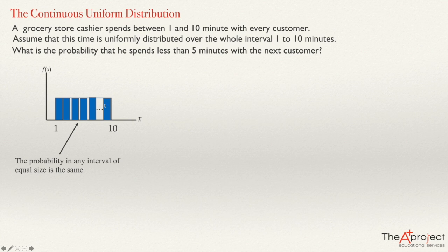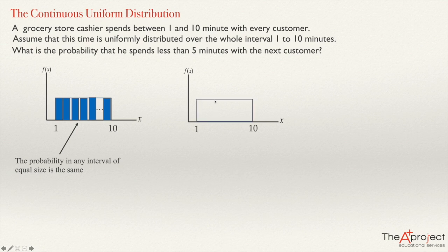So if we continue in this way, whatever rectangles we draw of the same base will have the same size. If we complete a histogram, it will be formed by rectangles of equal height. At the top of the rectangles we see the probability density function, which will be a horizontal line between one and ten on the x-axis.